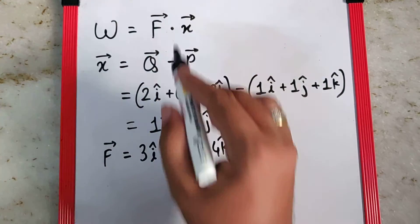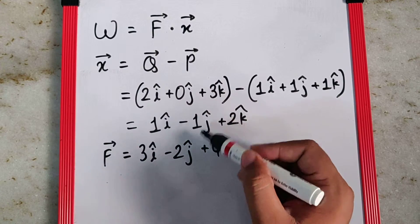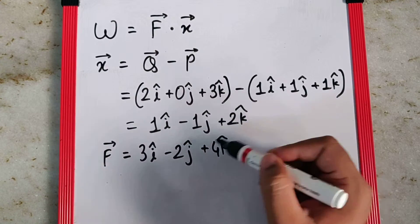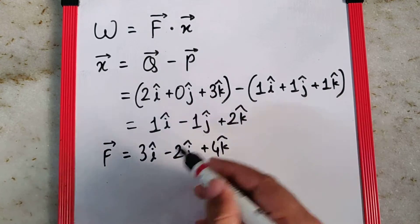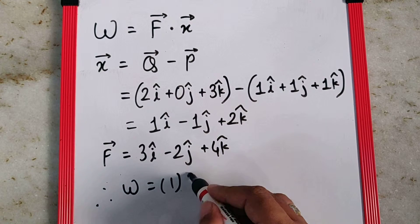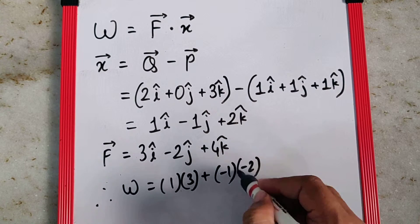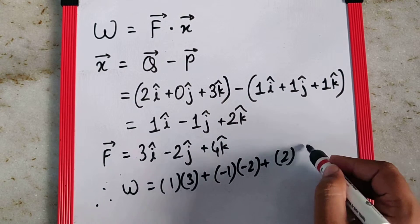If you take the dot product of the two, you multiply the i cap terms, then the j cap terms, then the k cap terms, and add all three. The work is 1 into 3 plus minus 1 into minus 2 plus 2 into 4.